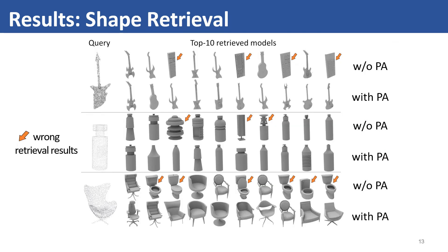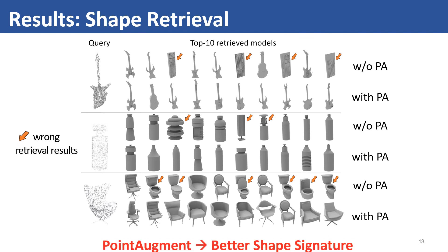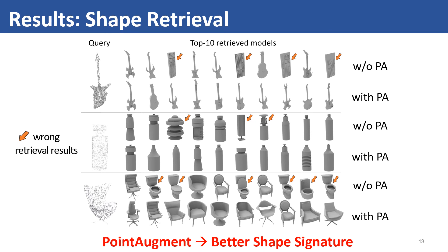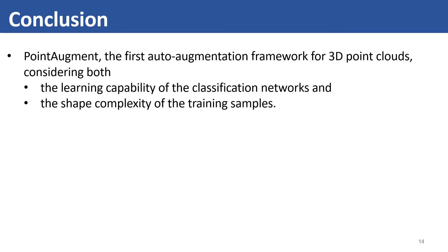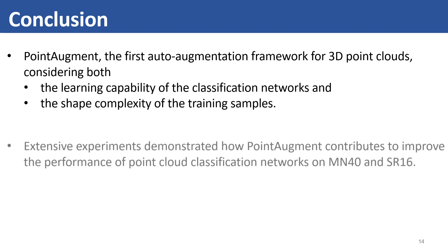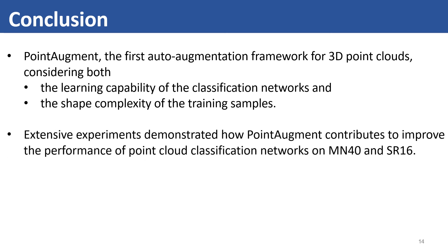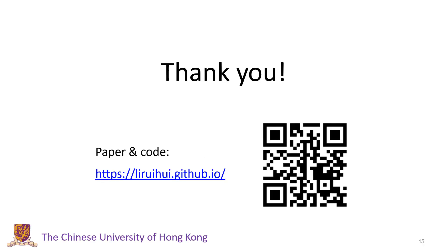We also show the top-10 retrieval results of existing classification networks trained with PointAugment, demonstrating that it facilitates networks to learn a better shape signature. In conclusion, we present the first auto-augmentation framework for 3D point cloud classification, considering both the learning complexity of the classification networks and the shape complexity of the training samples. Experimental results demonstrate the effectiveness of PointAugment in improving the performance of current classification networks. Thanks for listening — you can find all resources on our website.